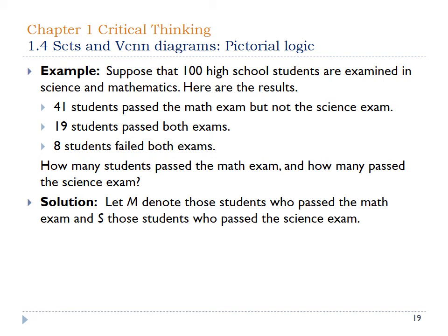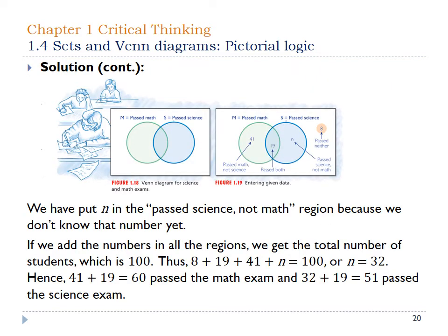Here's another counting example. 100 high school students are examined in science and math. 41 students passed the math exam but not science, 19 passed both, and 8 failed both. We design two circles — students who passed math and students who passed the science exam. One difference from the last case is that here we do have people who passed neither exam — those 8 people are on the outside of all the circles.